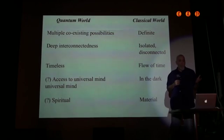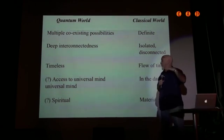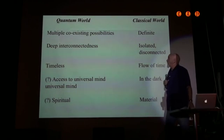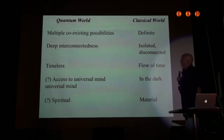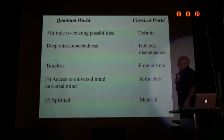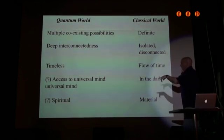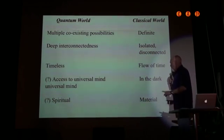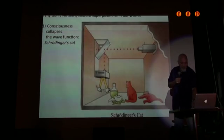Now, in a more general sense, if you look at the quantum world, at least in the sense of quantum consciousness possibilities, versus the classical world, quantum is multiple coexisting as opposed to definite, deep interconnectedness as opposed to isolated and disconnectedness, timeless versus having a flow of time, perhaps access to a universal mind in the dark, perhaps spiritual versus material. So I think that's one way of looking at the distinction.